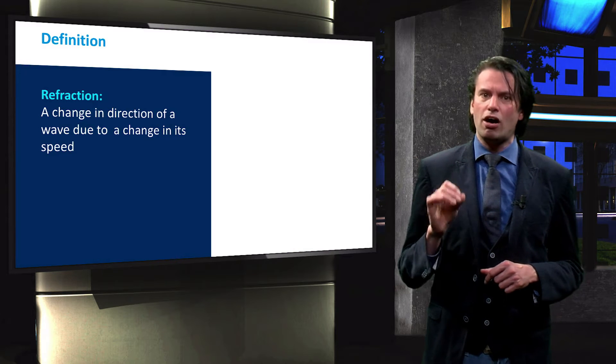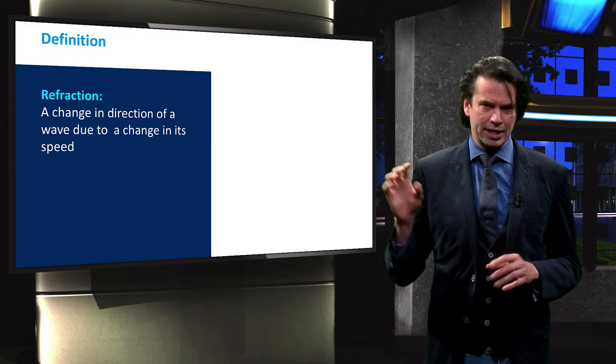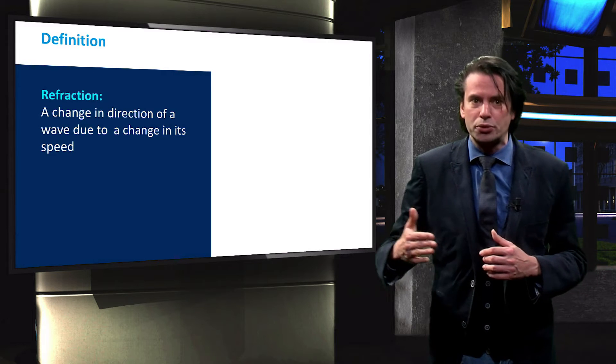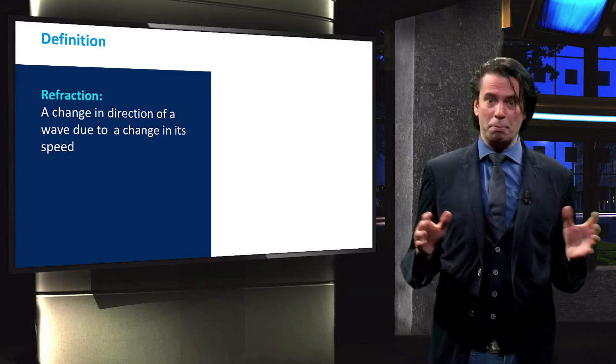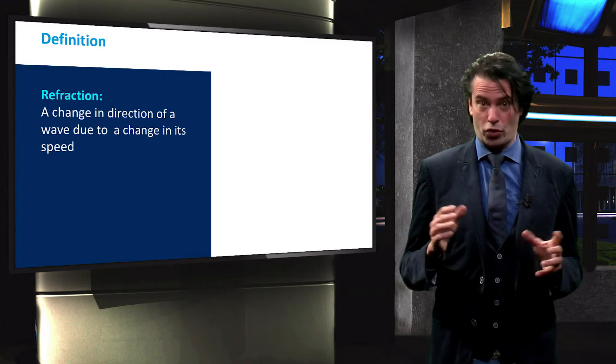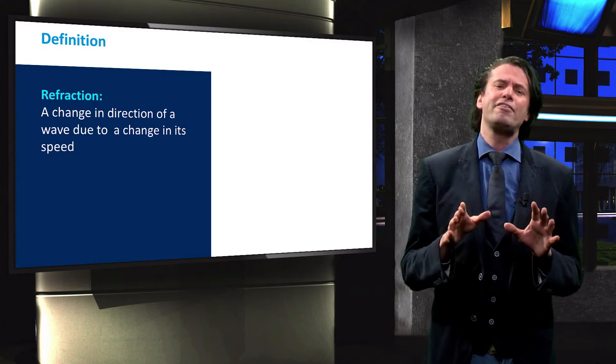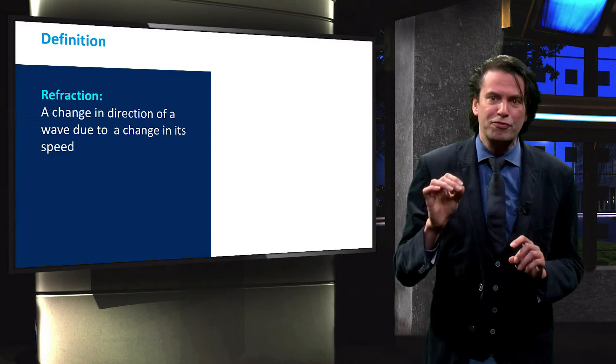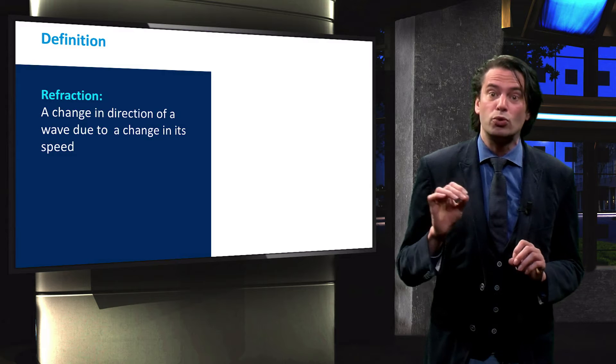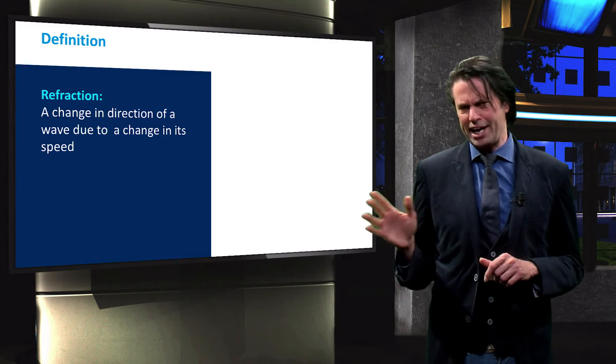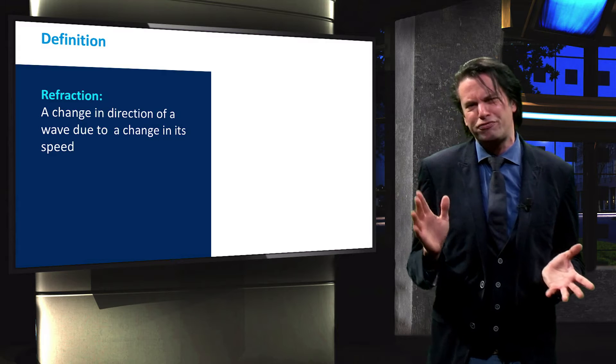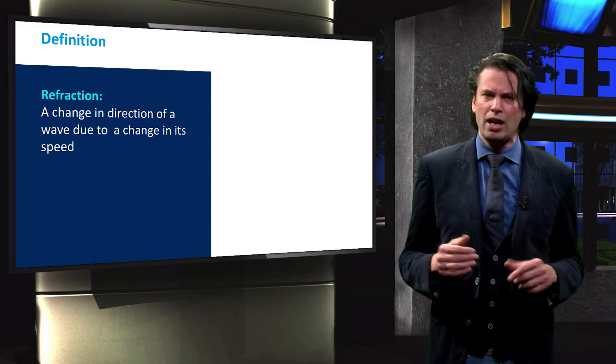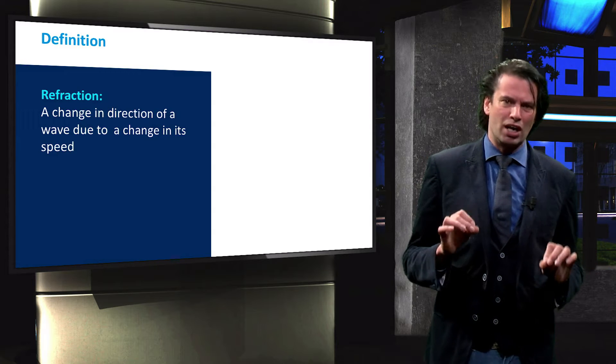The refractive index of a material, denoted by n, is a measure of how easily light propagates through the material. A medium with a refractive index of 2, for example, indicates that the light moves in that respective medium with half the speed in reference to light moving in vacuum. Air has a refractive index very close to 1, which means that the light propagates through air almost at the speed of light in a vacuum.